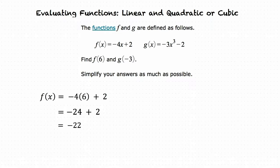We can then substitute negative 3 into x for our second equation of negative 3x cubed minus 2. We begin by cubing the negative 3 to become negative 27, then multiply it by negative 3 to result in 81. Finally we subtract 2 from 81 to result in 79.